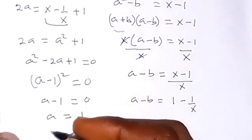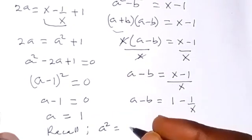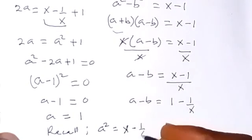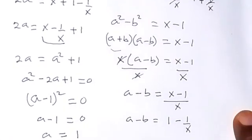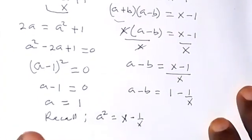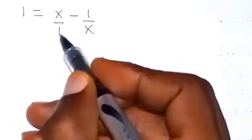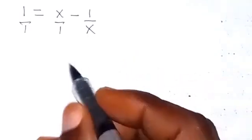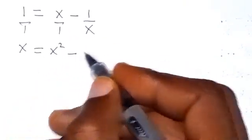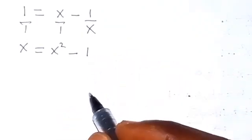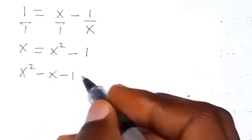Recall that A squared equals x minus 1/x. Since A equals 1, we have 1 squared equals x minus 1/x, which is 1 equals x minus 1/x. Multiplying through by x (the LCM), we get x equals x squared minus 1. Rearranging gives x squared minus x minus 1 equals 0.